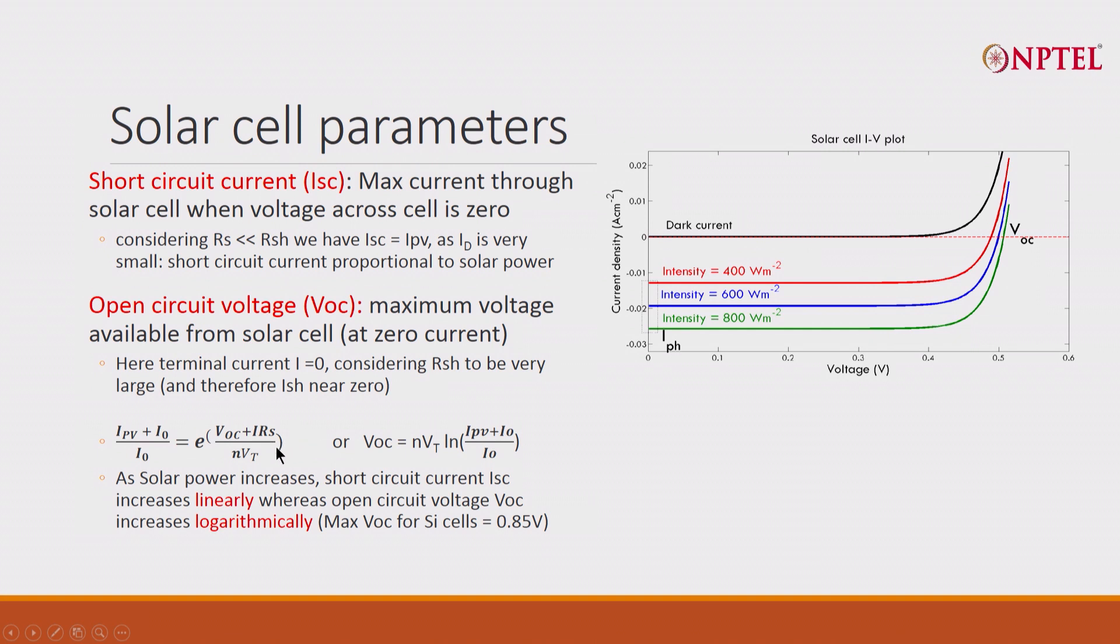And then you get Iphotovoltaic plus I0 by I0 equals e^(VOC+IRS)/(nVT), which basically means, if you take natural log, this e will become VOC plus IRS.